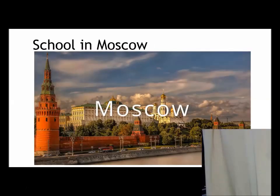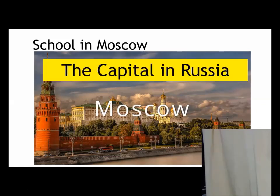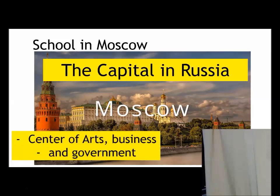First, we will focus on the place called Moscow, Russia. This is the capital of Russia. Moscow is the center of arts, business, and government — the same as Bangkok, where most government institutions, establishments, and buildings are found. You can see the arts, museums, and business centers in Bangkok. Also in Russia, you will find them in Moscow.